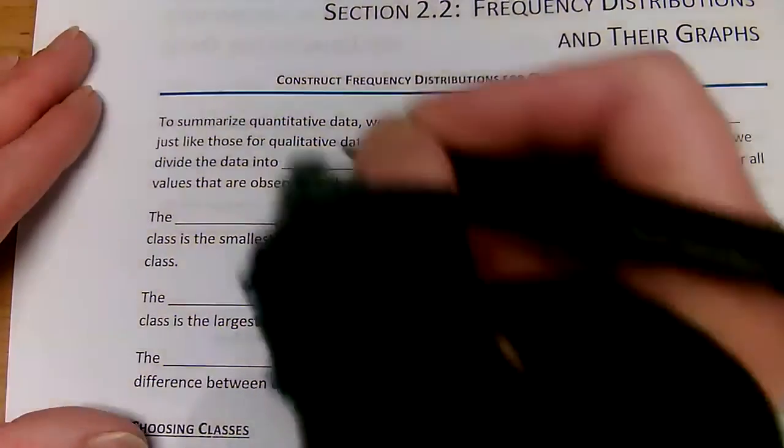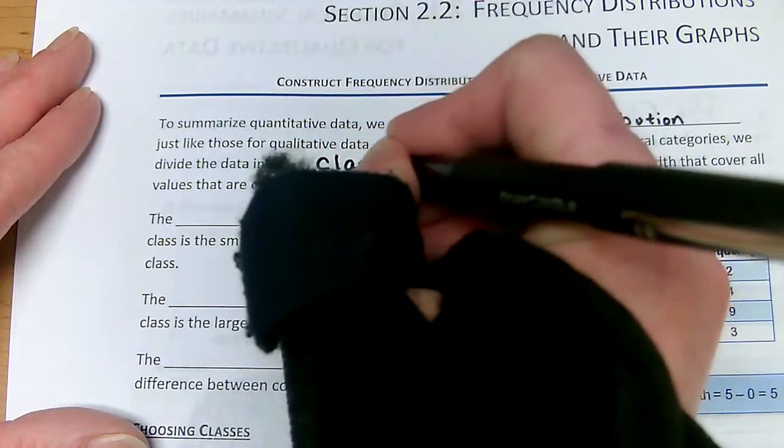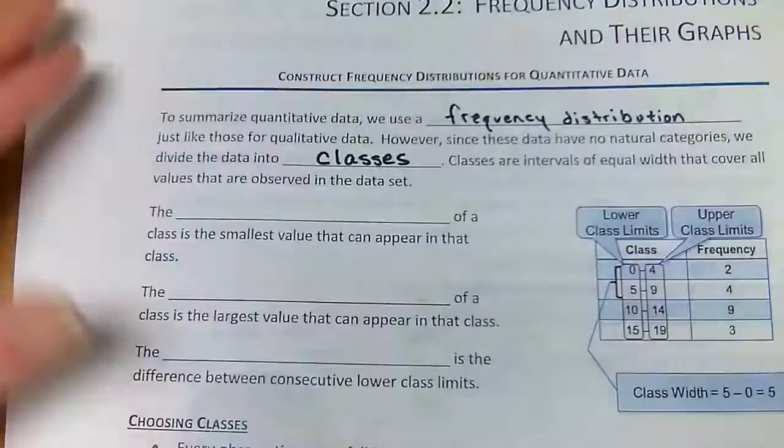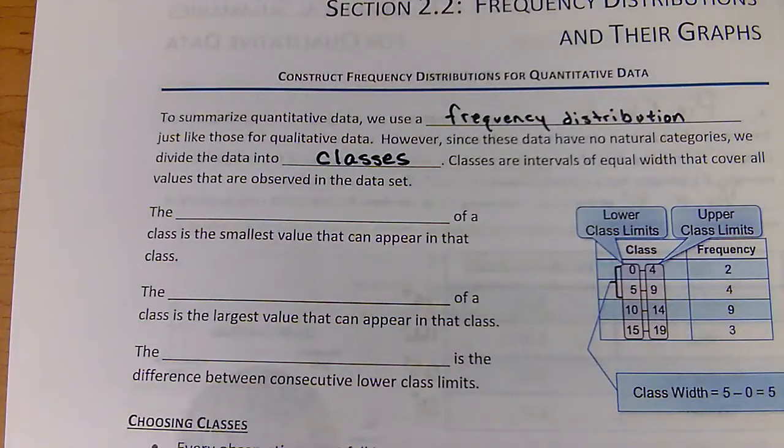However, since these data have no natural categories, we divide it into classes. We need to group the data. Classes are intervals of equal width that cover all values that are observed in the data set.